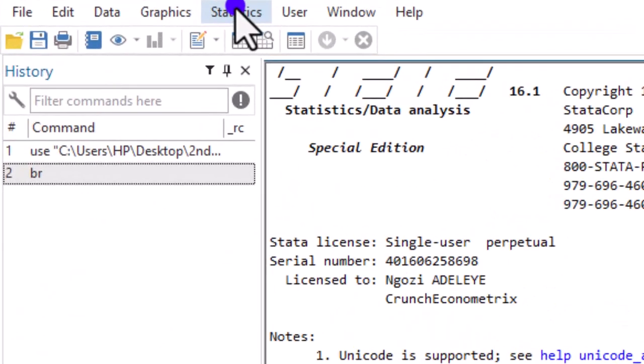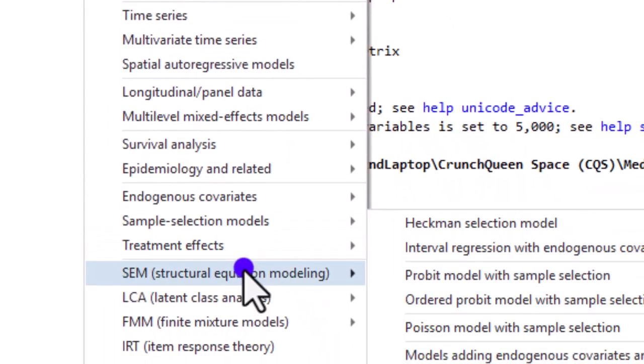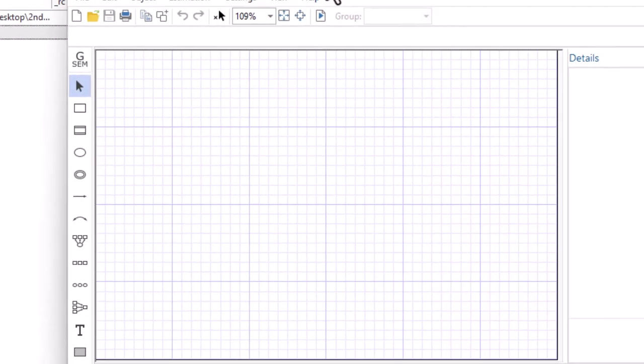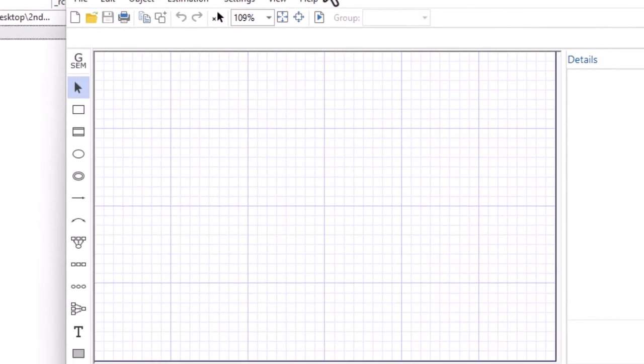So click on statistics. Maneuver to SEM. Then click on model building and estimation. So there you have these templates on your screen. If you look on this side, you'll see different icons. And if you just maneuver over them, you'll see what they are for. So you can spend some time on this to see what these icons are there for. So now I'm going to show you how I built the structural equation model.